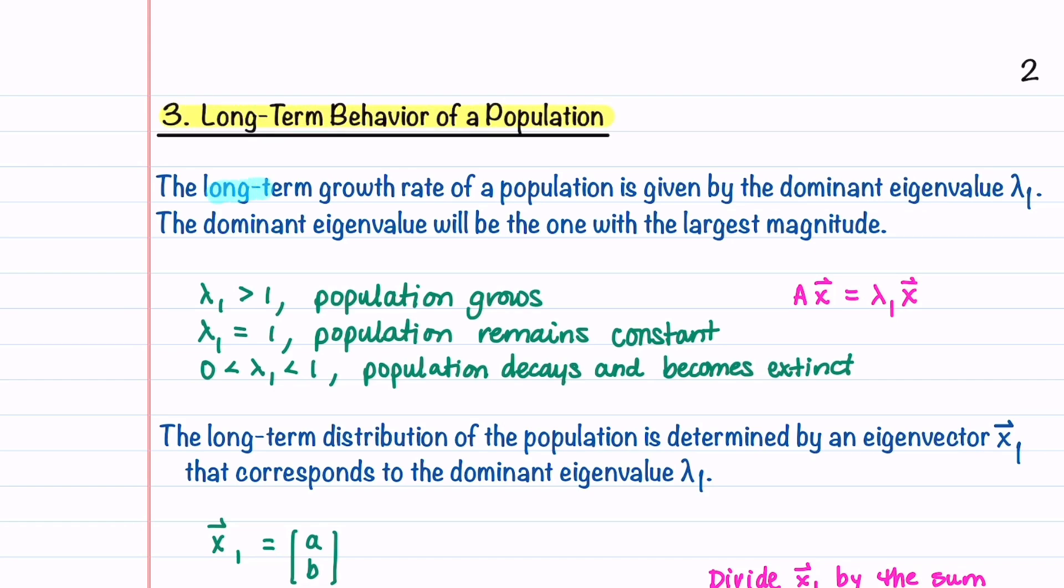The long-term growth rate of a population is given by the dominant eigenvalue that we'll call λ_1. The dominant eigenvalue is the one with the largest magnitude. Our eigenvalue is the scalar λ_1 in the equation Ax = λ_1 x.